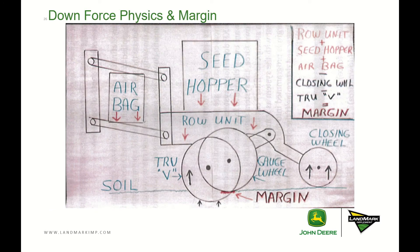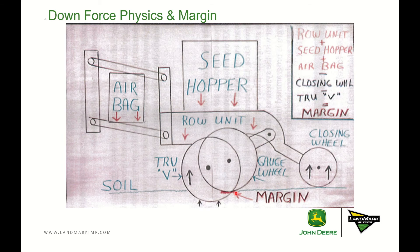To wrap up on downforce physics and margin: looking at this diagram, we have forces going down — the airbag, hydraulic cylinder, or mechanical spring; the seed hopper; and the weight of the row unit shank — and the soil pushing back up. The weight on the gauge wheels, shown in the diagram, is what the margin is: the additional force required to push down to achieve planting depth. The amount needed depends on field conditions as well as speed — the faster you go, the more downforce you need to keep the row unit in the ground.